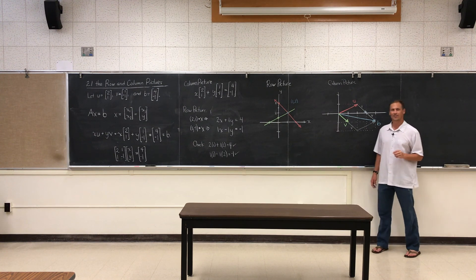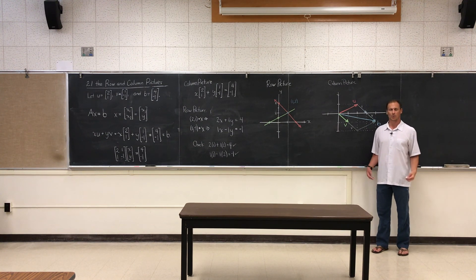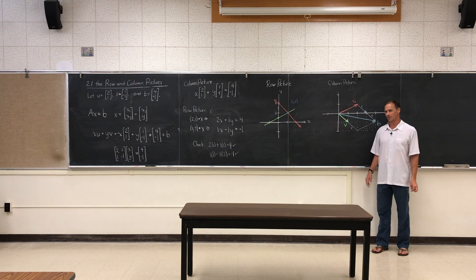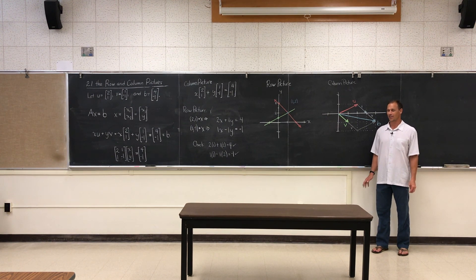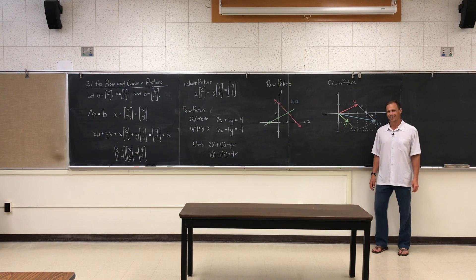So that is the difference between the row solution or the row picture and the column solution and the column picture. In our next video, we're going to try this with a three-dimensional picture. Thanks for watching. See you in the next video.